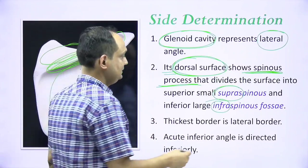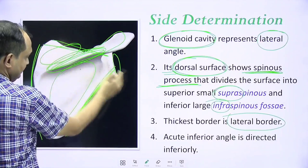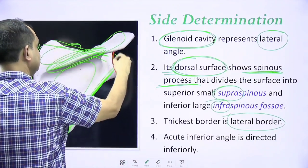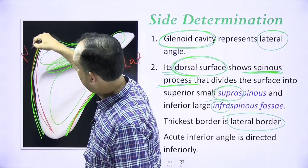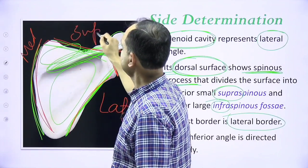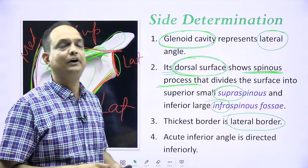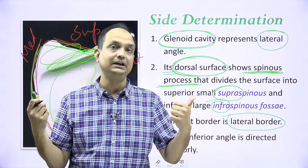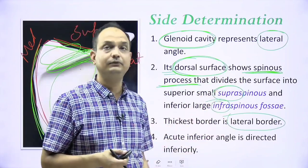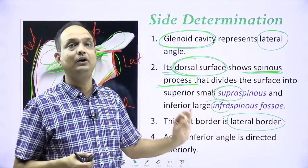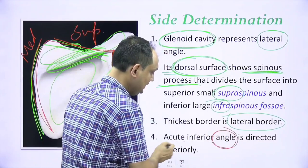The third point is that there are three borders because it is a triangular plate. Once you place the glenoid cavity on the lateral side, one border becomes the lateral border, one becomes the medial border, and one becomes the superior border of the scapula. When you see the three borders, you will realize that the lateral border is the thickest border. So the points for side determination are: glenoid cavity laterally, dorsal surface identified by spinous process dividing it into supra- and infra-spinous fossa, and the lateral border is the thickest.